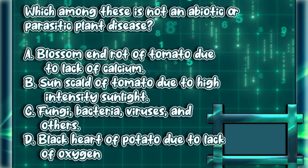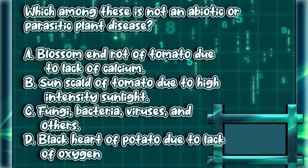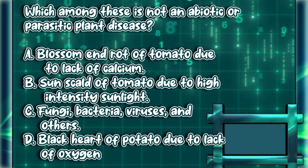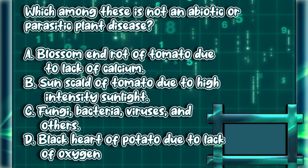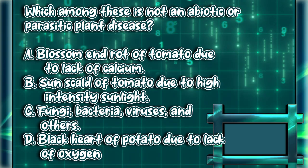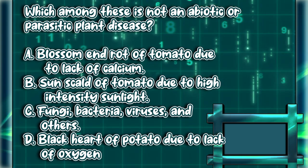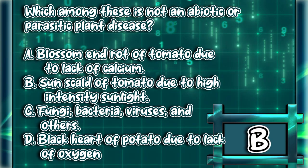Which among these is not an abiotic or parasitic plant disease? A. Blossom end rot of tomato, due to lack of calcium. B. Sun scald of tomato, due to high intensity sunlight. C. Fungi, bacteria, viruses, and others. D. Black heart of potato, due to lack of oxygen. The answer is letter C.